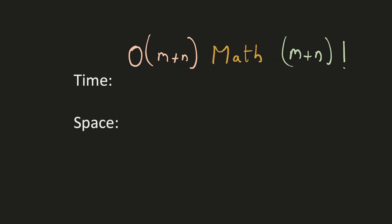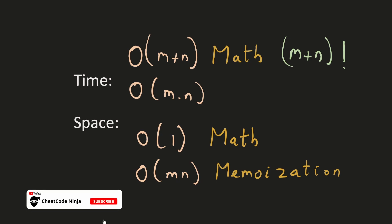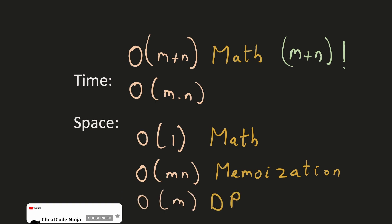The time complexity of the maths solution will be O(M+N) since we calculate (M+N) factorial. The time complexity for both the top-down and bottom-up approaches is O(M×N), because we compute the result for each cell in the grid. The space complexity for the maths solution is constant. For the top-down memoization solution, we cache the result for each cell, so space complexity is O(M×N). In the bottom-up approach, we don't store the whole grid, so space complexity is O(min(M, N)).